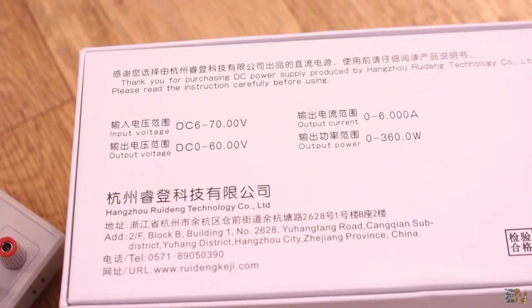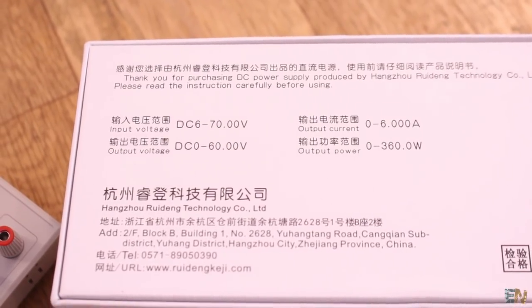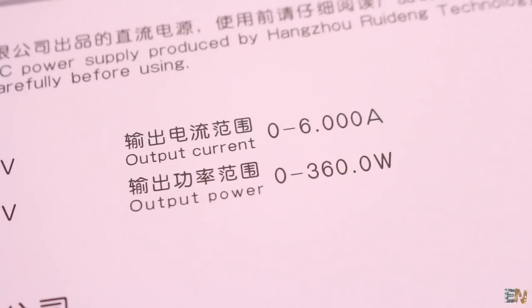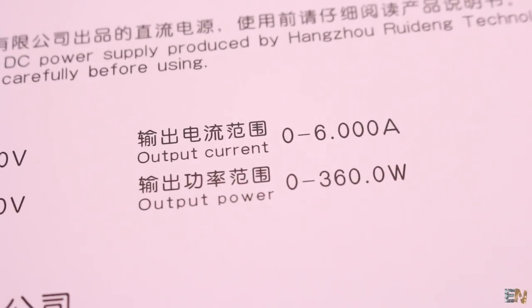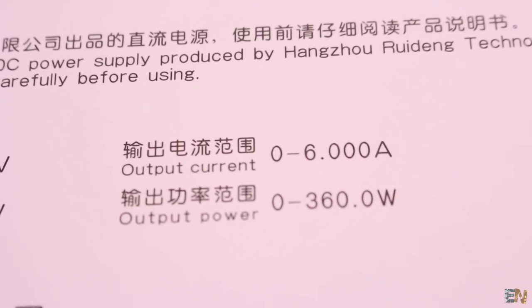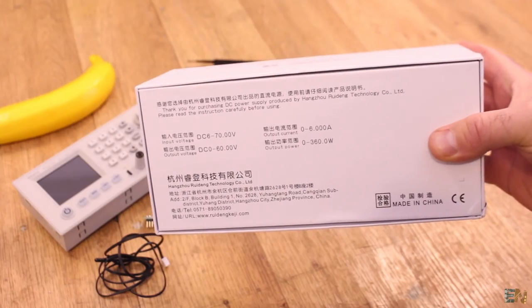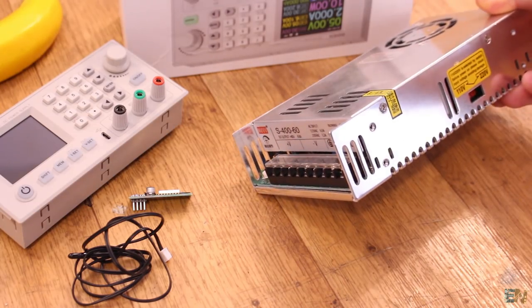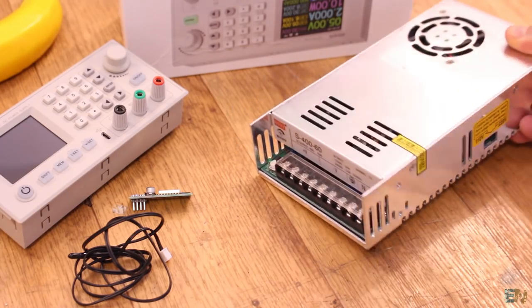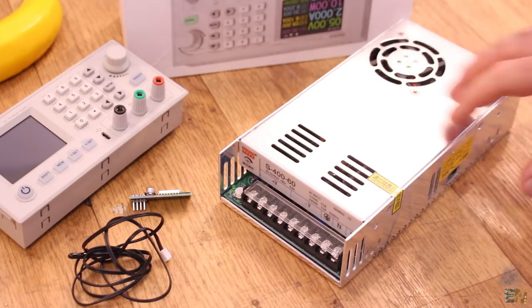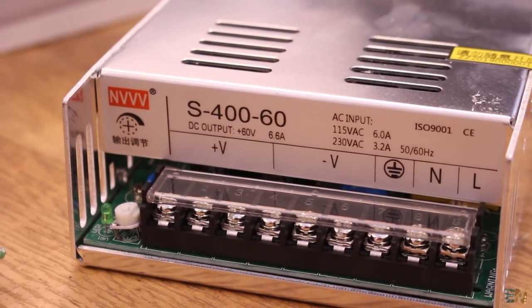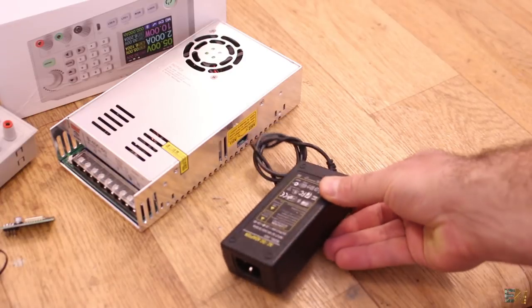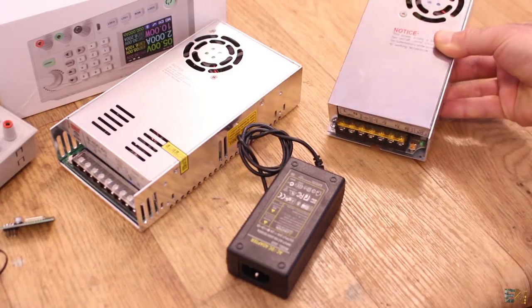For the voltage, this controller could have an input from 6 to 70V and an output from 0 to 60V. As for the current, it could deliver a maximum output of 6A or a total maximum power of 360W, which is quite decent. But of course, these are maximum ratings and you'll also need a powerful supply to power this controller and achieve these maximum specs.